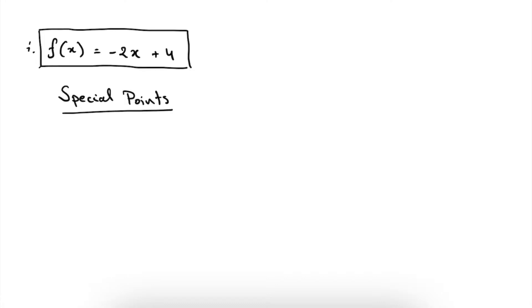The first step in this systematic approach of function analysis is to find the special points of this function. These are points that will tell us something more about where this function is positive, where it is negative, and how it behaves when x becomes a very large positive or negative number. For polynomials, the special x points will always be plus and minus infinity, and x is equal to 0, where the function will cross the vertical axis. For f of x, the special point will always be where f of x is 0.